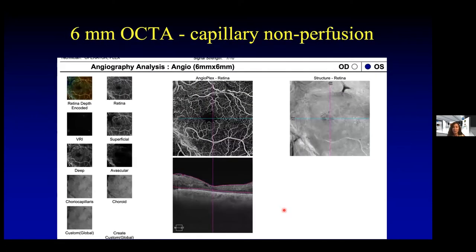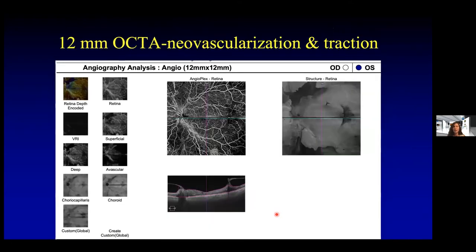This is the same eye looking at the six millimeter scan. We can still see changes in the fovea, but now there's some irregular blurring of the vessels, and on the en face OCT we can see striae from traction. Here's the 12 by 12 millimeter OCTA, and here we can identify abnormal retinal blood vessels with some capillary nonperfusion and what looks like traction — evident on the en face where those regions look dark because they're more elevated — and the structural OCT below confirms that there indeed is traction.